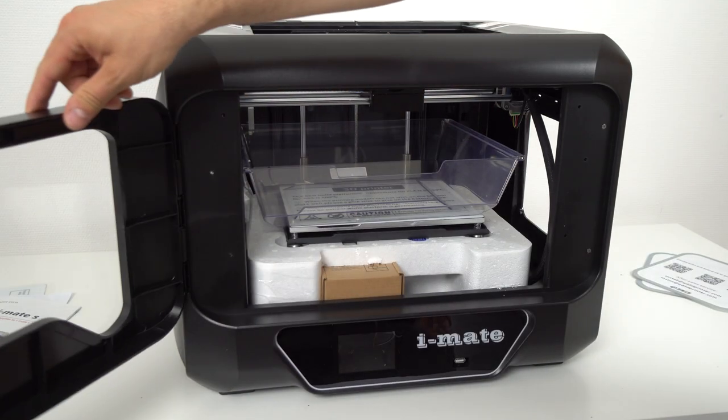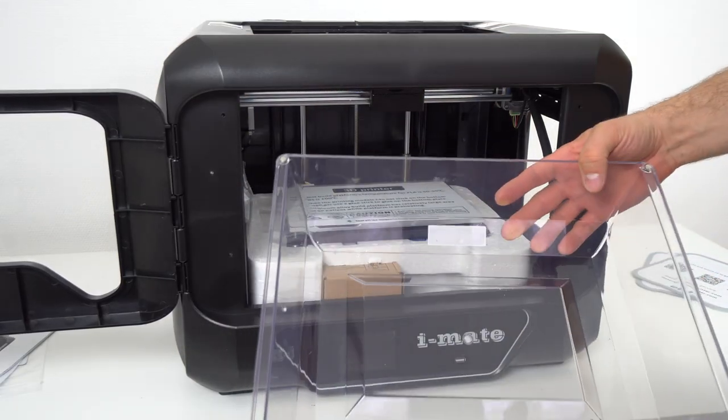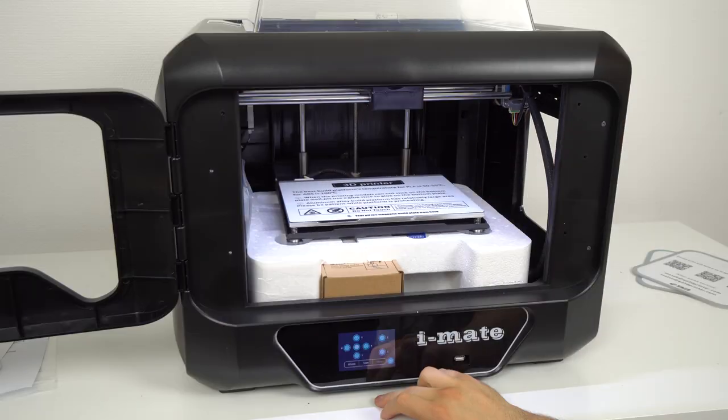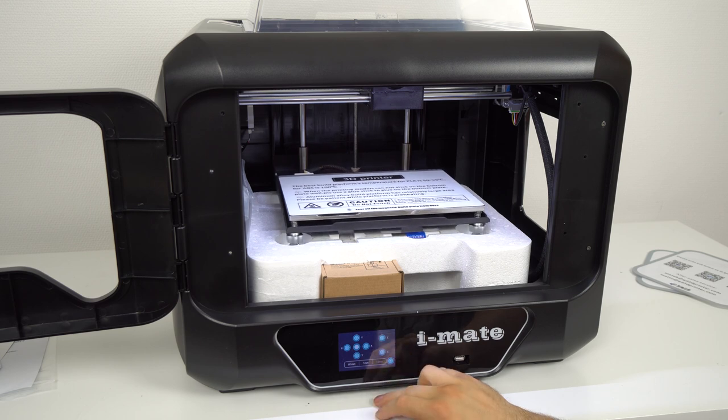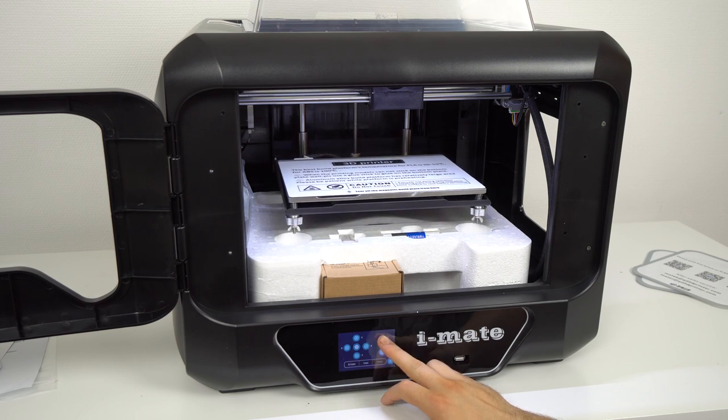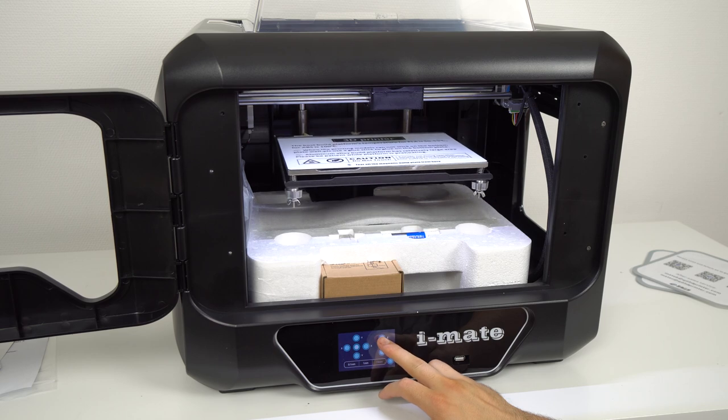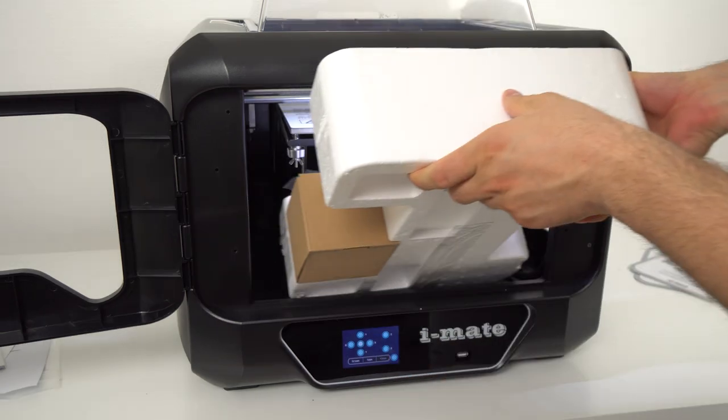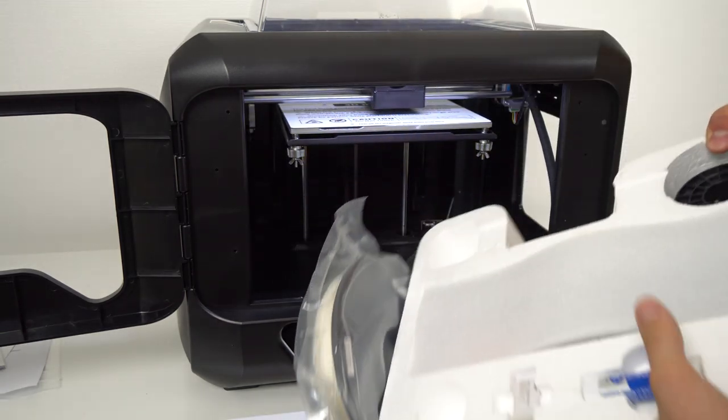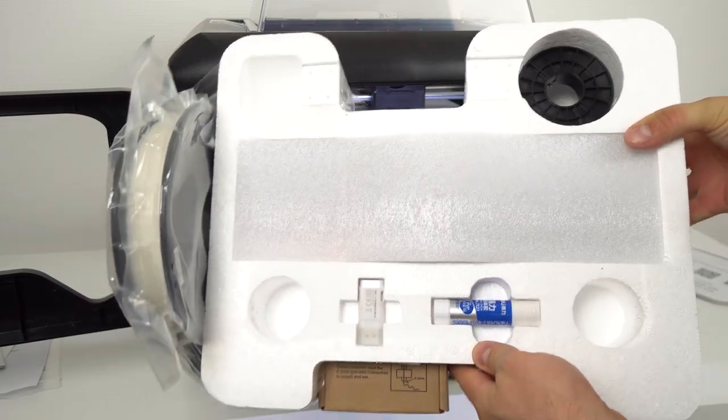And now the printhead can move freely. Next I opened the front door and I took out the top cover. And then I took out the power cable and I plugged in the printer. I switched it on and I lifted the build platform from the software interface which allowed me to remove protective styrofoam that was securing the heat bed during shipping. Inside the printer there was some more stuff.